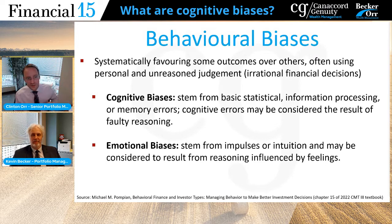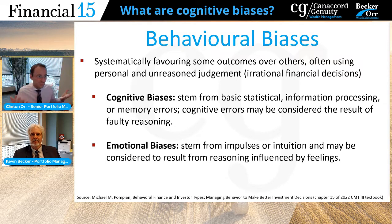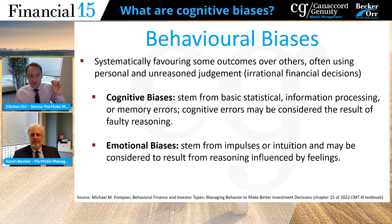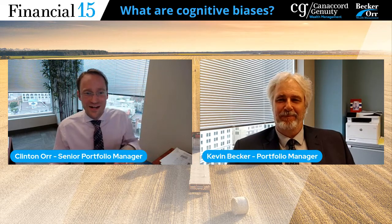You can break behavioral biases down into two categories. Today we're talking about the first category: cognitive biases, which involve improper information processing, a memory error, perhaps an error with statistics — and for those reasons, it has faulty rationale leading to the outcome. Or you could have an emotional bias, which could be an impulse or intuition where feelings influence the reasoning. So that's behavioral biases in a nutshell. We'll jump right into some cognitive biases.